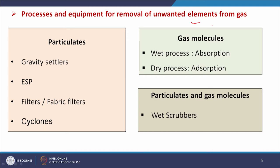Now we will see processes and equipment for removal of unwanted elements from gas. In the gas, one is particulate matter and another is other gas components we need to remove which are not desirable in the environment. For the separation of particles or particulates there are a number of techniques: gravity settlers, electrostatic precipitators, filters (fabric filters), and cyclones. These are the mostly used equipment and processes for removal of particulates from the gas stream.